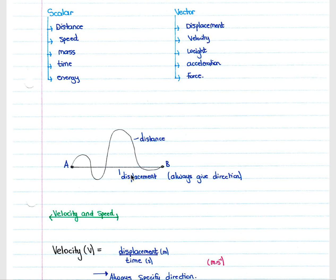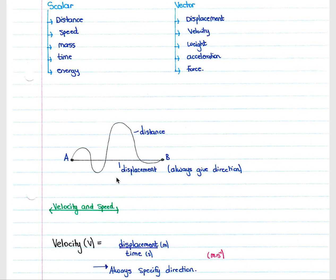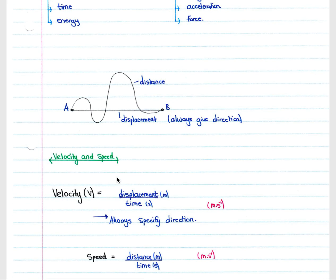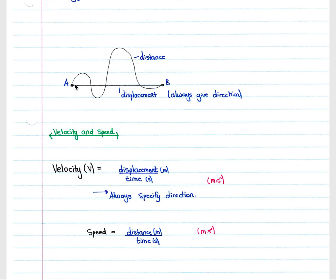When you refer to displacement, you always give a direction — for example, x kilometers east of A. Velocity is calculated using displacement (your straight-line distance between A and B) divided by time in seconds, and you must always specify direction. The unit is meters per second.